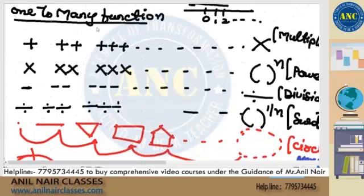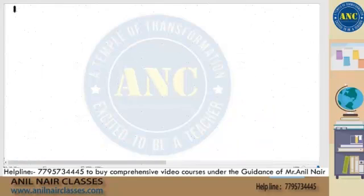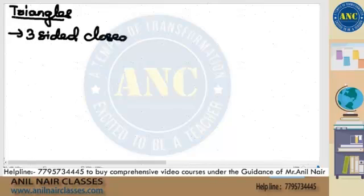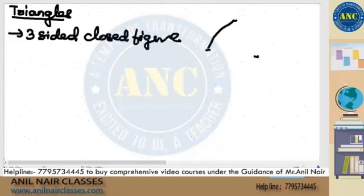We will start with triangles — the most important domain for any aptitude exam. A triangle is nothing but a three-sided closed figure. If I label the sides 1, 2, 3 — that is a triangle.